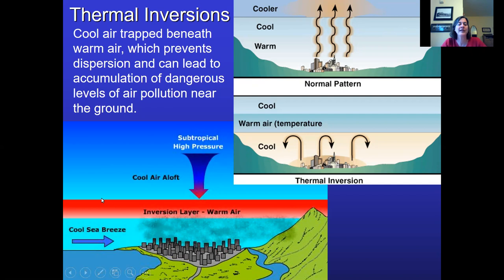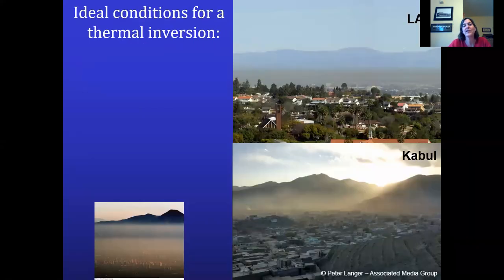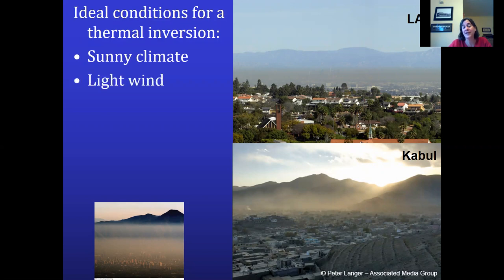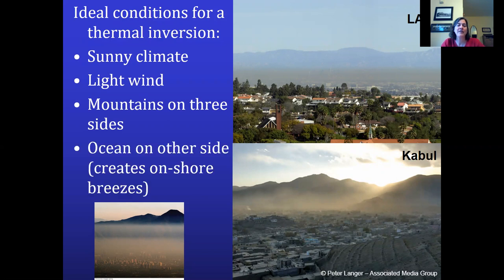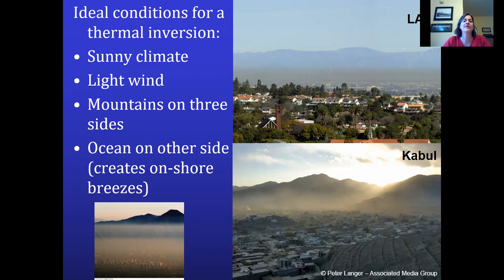The ideal conditions for thermal inversions are: a sunny climate for photochemical smog; light winds — not enough to blow pollutants away; mountains on three sides; and ideally an ocean on the fourth side. Sea breezes bring cool air off the ocean — that's why people love living in LA — but the problem is that cool air shoves underneath the warm air, creating a thermal inversion. You can actually see the cap layer in pictures of LA. LA is surrounded on three sides by mountains, fitting all four criteria perfectly.